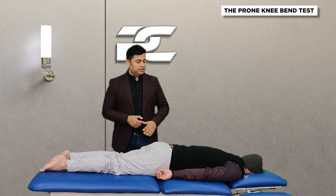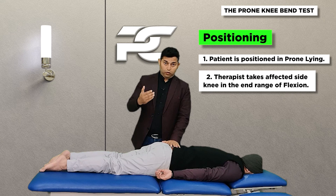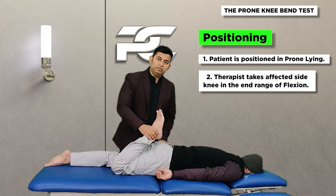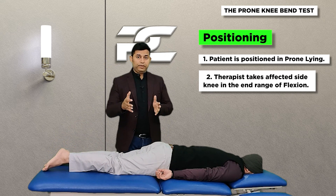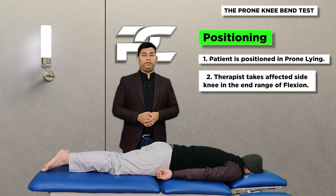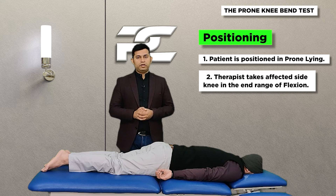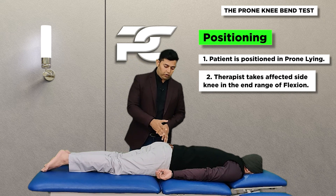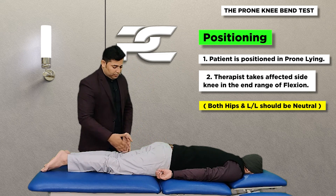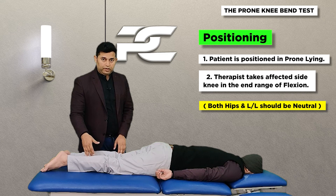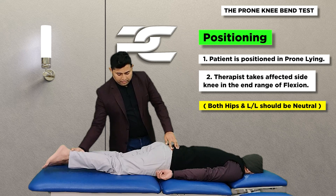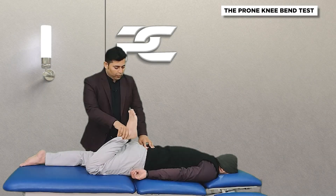As the name suggests, the prone knee bend test simply involves making the patient assume the prone lying position and then taking the knee joint into the flexion range. It is not as simple as it looks, because the therapist intends to rule out the involvement of the nervous system in the production of the patient's response. Before we start the test, we ensure that both hips remain in the neutral position and the lower limbs remain parallel to one another.